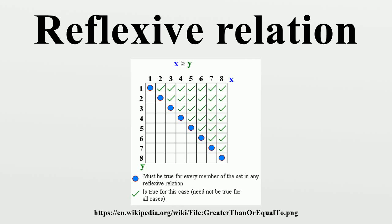In mathematics, a reflexive relation is a binary relation on a set for which every element is related to itself. In other words, a relation tilde on a set S is reflexive when X tilde X holds true for every X in S. Formally, when X is in S, X tilde X holds. An example of a reflexive relation is the relation 'is equal to' on the set of real numbers, since every real number is equal to itself.